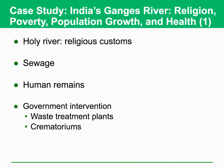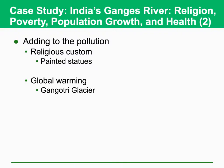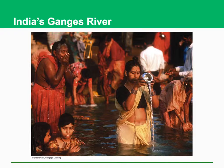There are two reasons that add to the pollution. The first one is the religious customs, which is a unique situation in India. The second one is a more global issue, which is global warming due to the greenhouse effect. This is the Ganges River, and many people use this river water. But the problem is the water quality is not good, and that can cause some sanitary problems that should be solved.